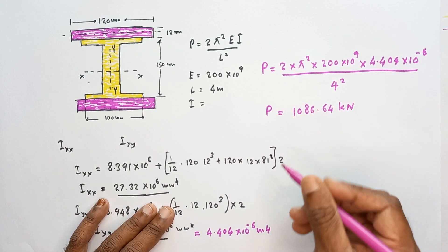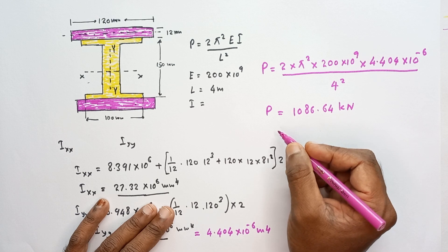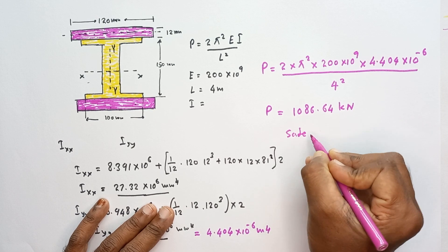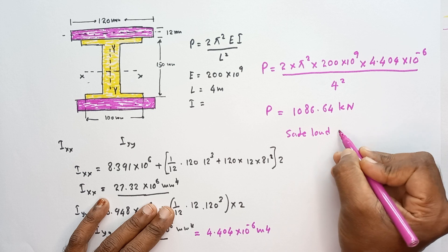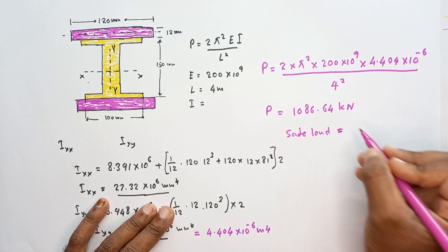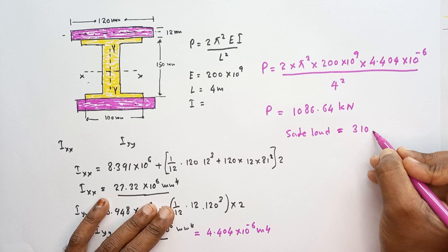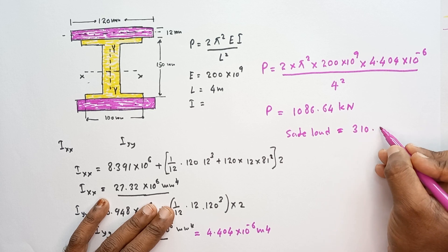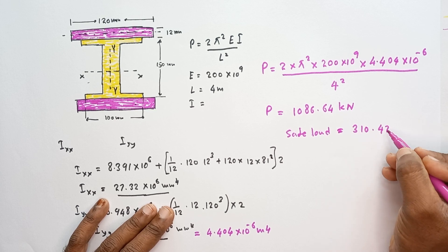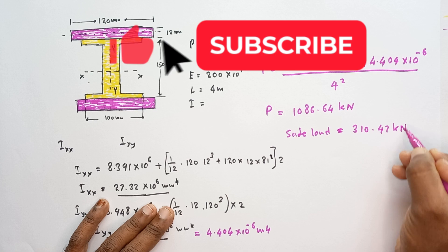Then the safety factor is given as 3.5. So then we can calculate the safe load by dividing this value by 3.5, that is equal to 310.47 kilonewtons.